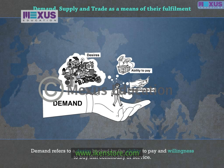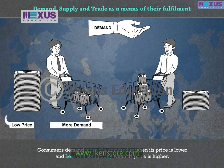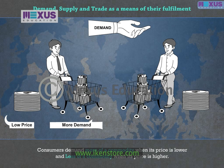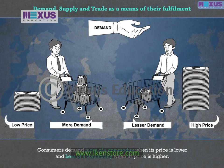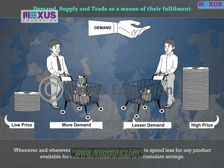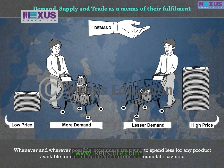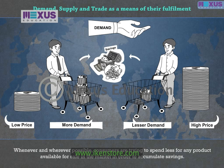In economics, the term demand exists only when these three factors come together. In short, demand refers to a desire backed by the ability to pay and willingness to buy that commodity or service. It is a common observation that consumers demand more of a commodity when its price is lower and less when its price is higher — consumers try to spend less wherever possible, which we term as economizing.